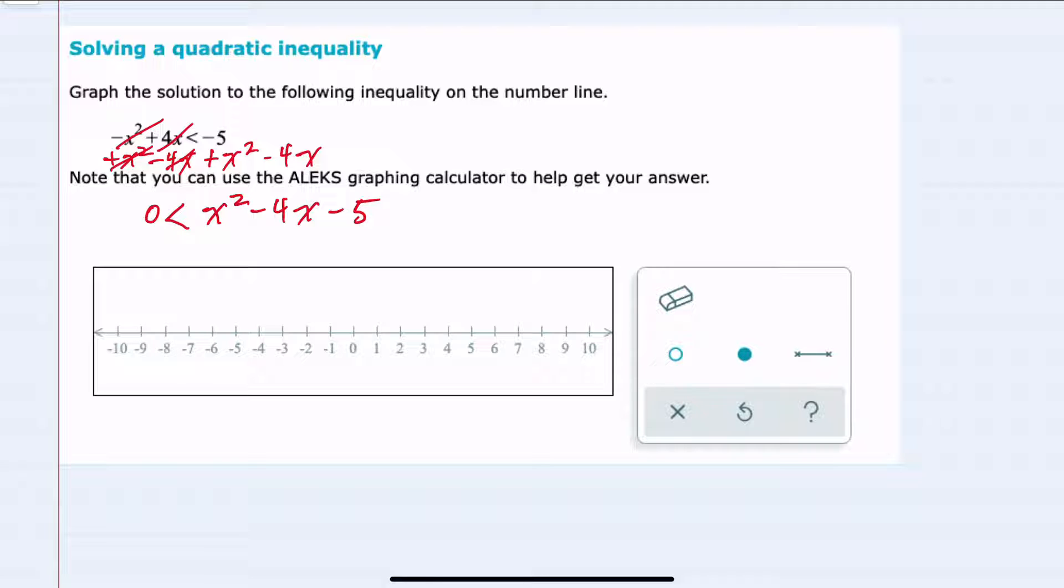From here I have my quadratic on one side, zero on the other. I would first look for where that quadratic equals zero, and I can find this by factoring.